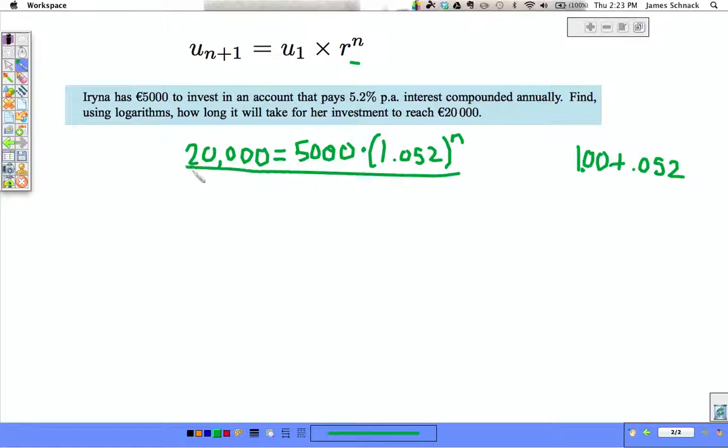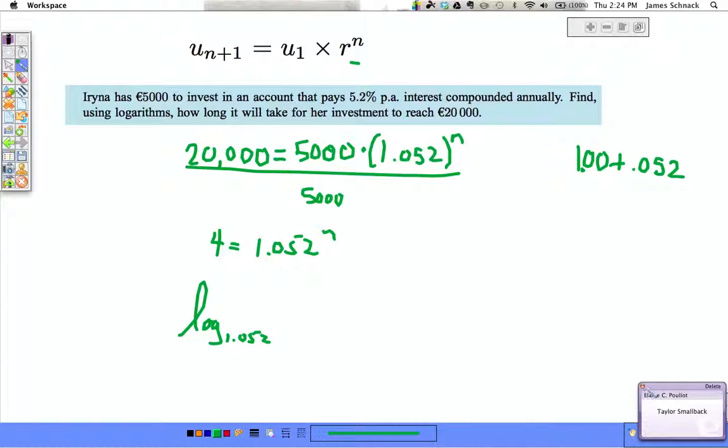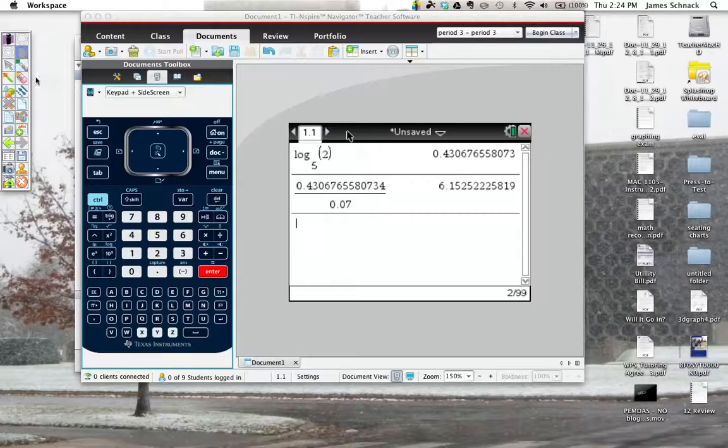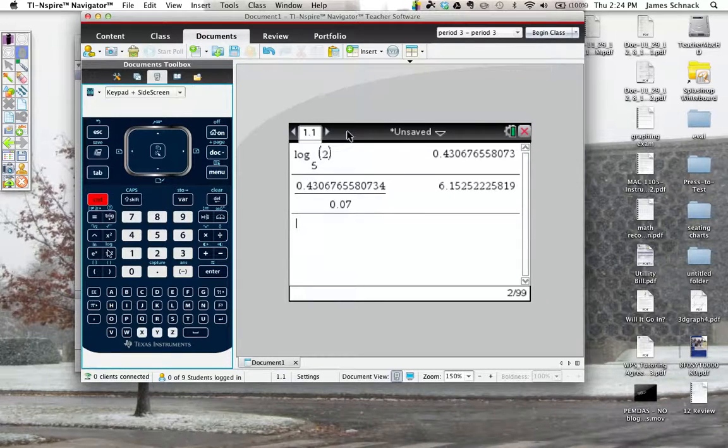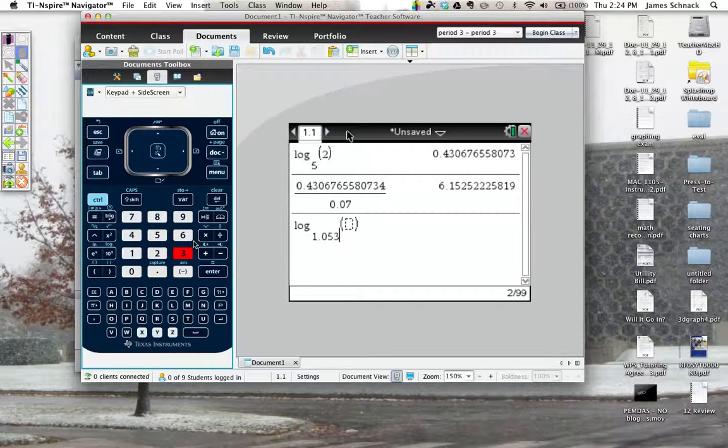All right, so here we go. Divide by 5,000. If we put 4 equals 1.052 to the n and now we change to a log. Our base is 1.052 of 4 equals n.